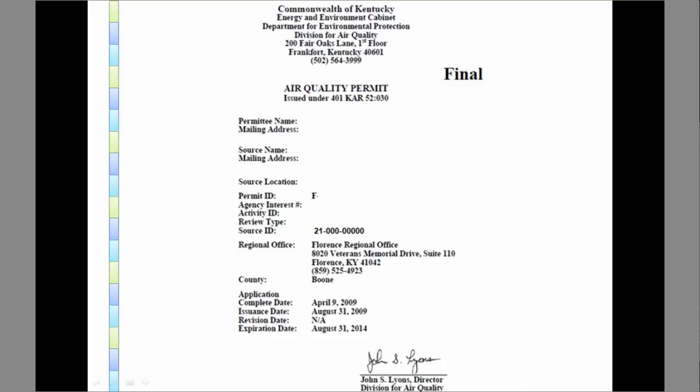The review type is the type of source you are, whether minor, conditional major, Title V, etc. The source ID is a 10-digit number that starts with 21. Your regional office and contact information are always printed on the cover page, along with the permit issuance date and expiration date.